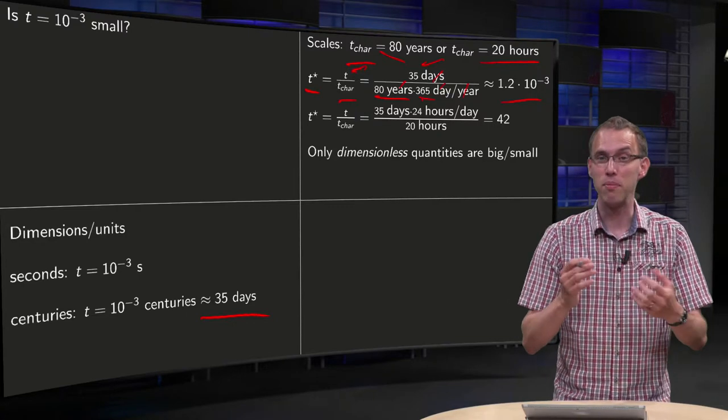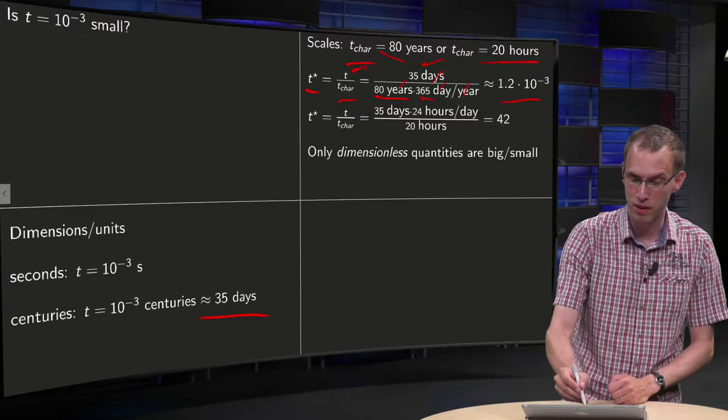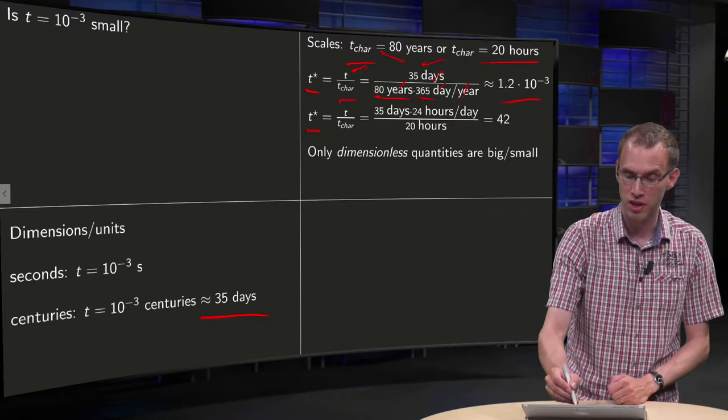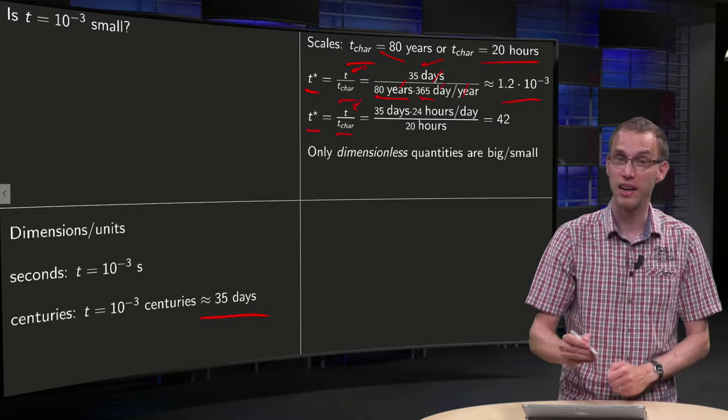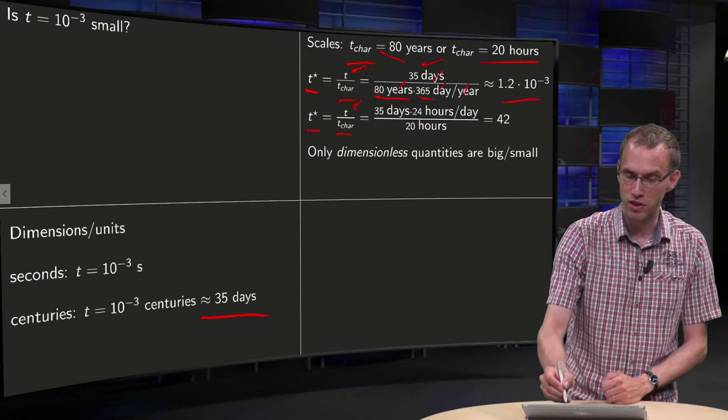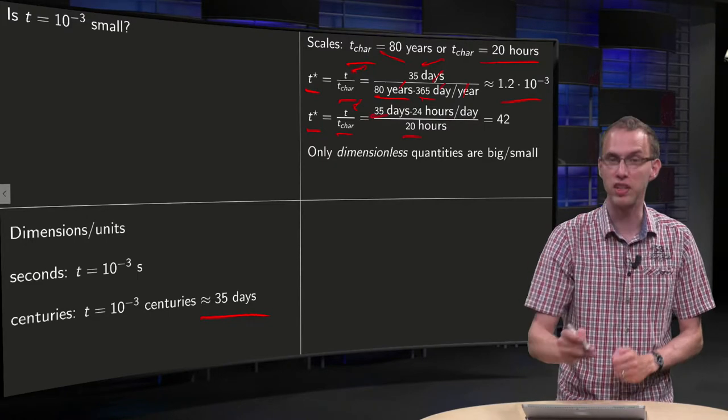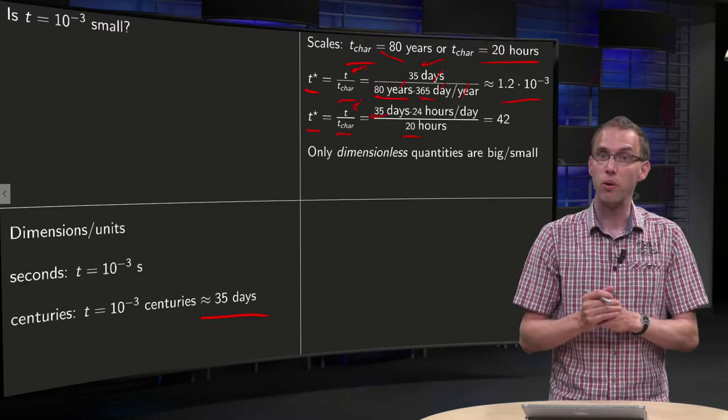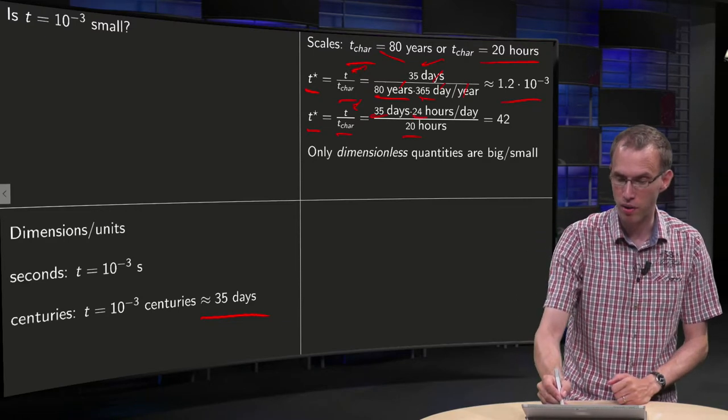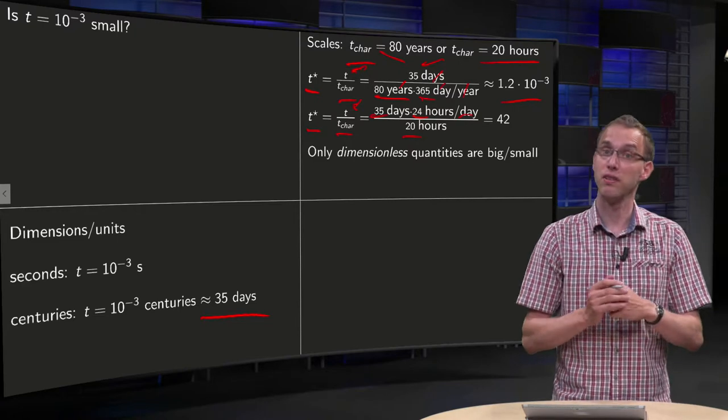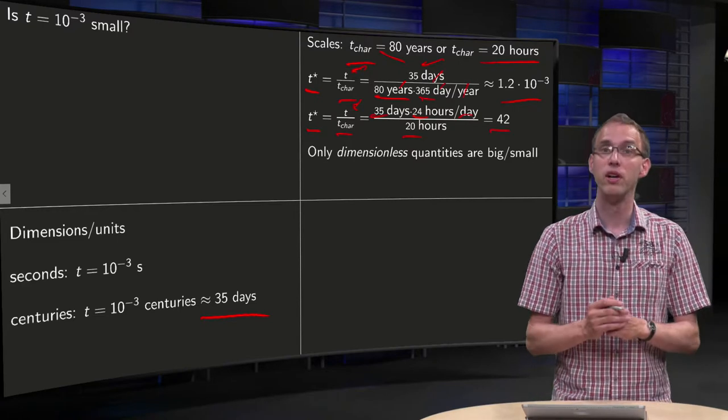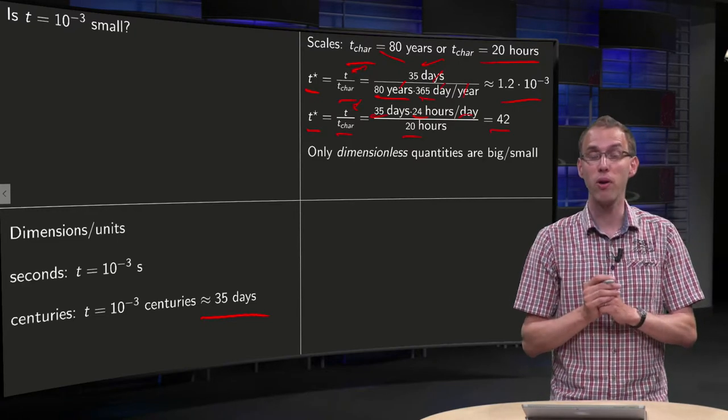Then if you do the same for our mayfly, so you have the dimensionless time t star equals t divided by its characteristic time, which is now 20 hours, you get 35 days divided by 20 hours. You want to non-dimensionalize, so you have 24 hours in a day, and what you get if you compute this is 42, which is not small at all.